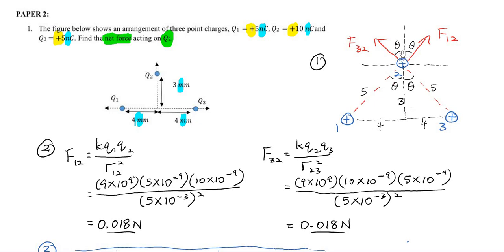We need to put the angle theta here, because we need to resolve F12 and F32 into X and Y components. The horizontal and vertical lines are the X and Y components we need to resolve. This angle theta you can find using the distances 4 and 3 — using trigonometry you can find theta. And of course the hypotenuse is 5 because it's a 3-4-5 right-angle triangle.